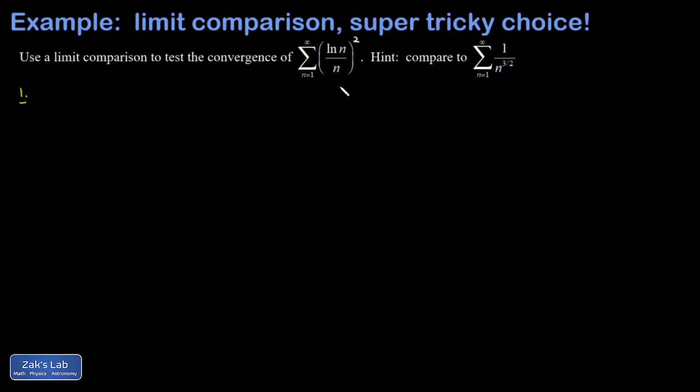But I have a natural log in the numerator, and that's growing as n becomes large. So maybe this thing is not converging as aggressively as one over n squared. I'm going to compare it to one over n, and that is the divergent harmonic series. So we're going to do a limit comparison here and see what happens.